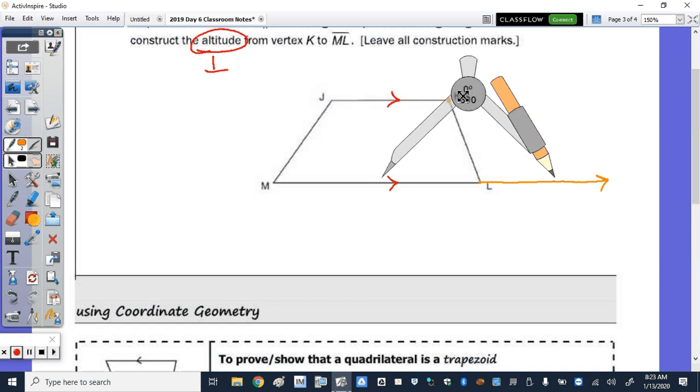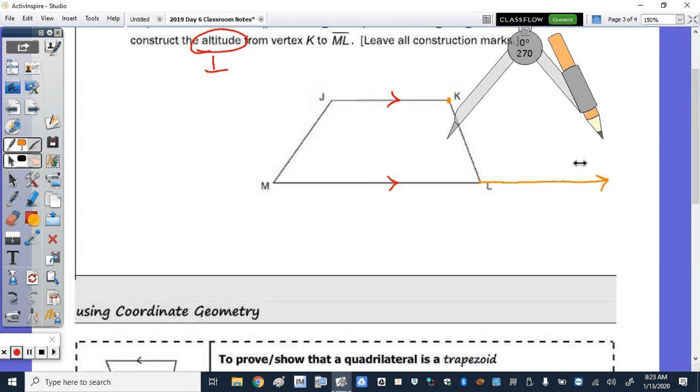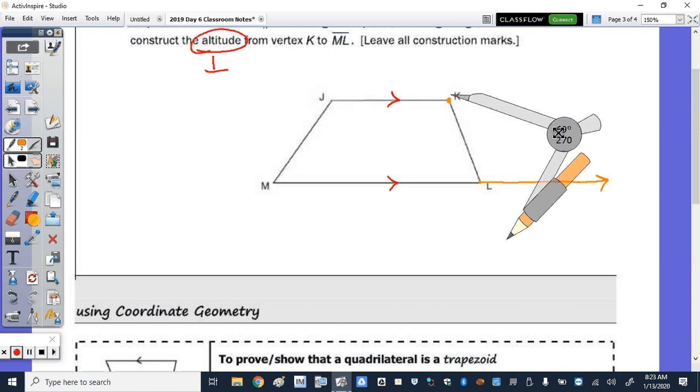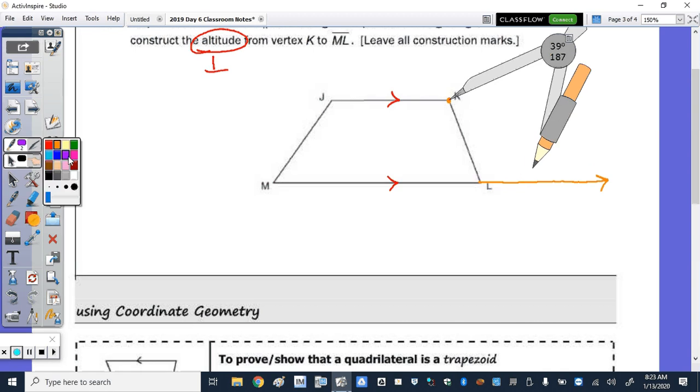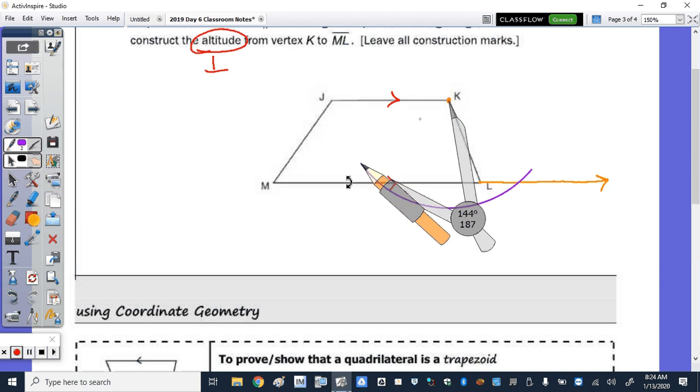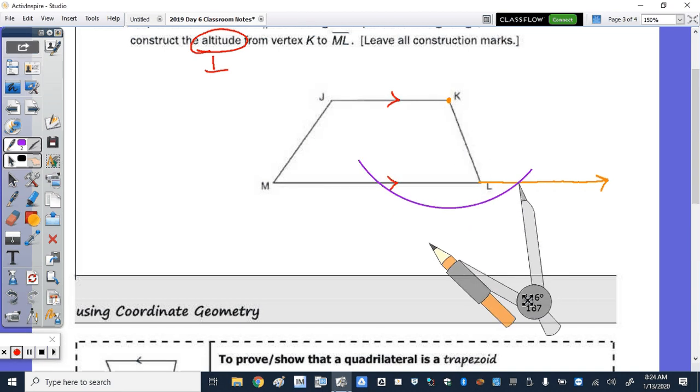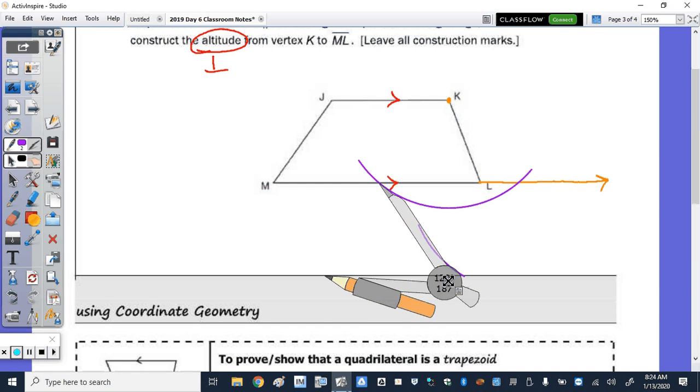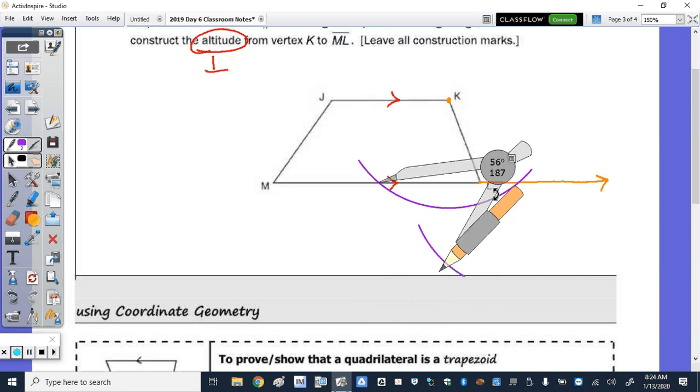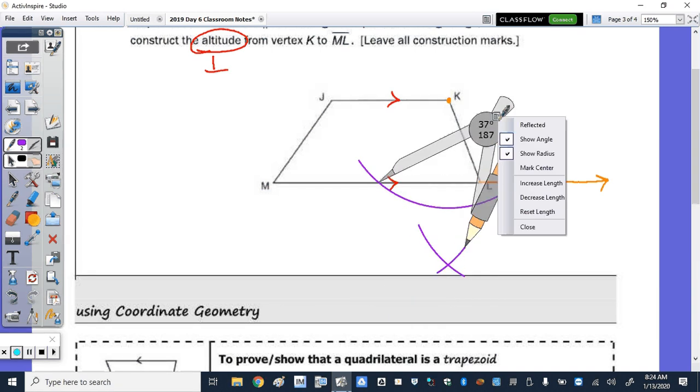Extend ML, put your compass on K. I'm going to rotate this. And we draw an arc. So we draw an arc so that it intersects ML, the side that we're drawing to. And then the extended side. So putting your compass on the two points of intersection of the arc and the side.